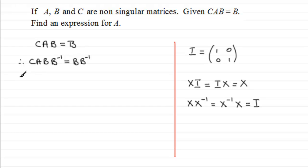So what is the result of this? Well, B times its inverse gives us the identity matrix. So therefore we're going to have CA times the identity matrix I equals I.